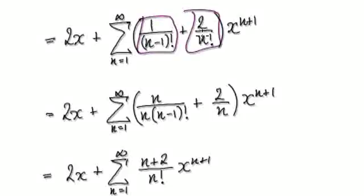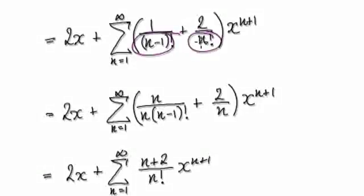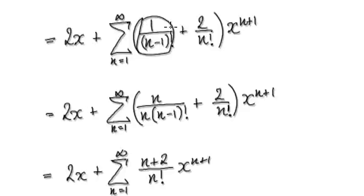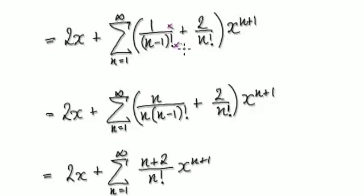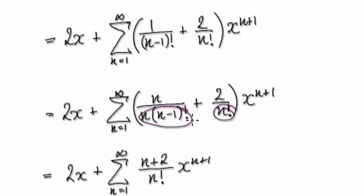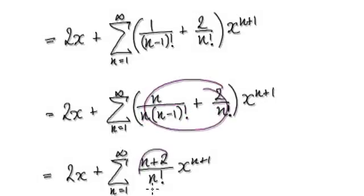Now you've got one fraction plus another fraction and you want to merge them together. In order to merge fractions, the two denominators have to be the same. So multiply top and bottom here by n — this thing here will become this. By the way, this thing here is n factorial. So bearing that in mind, this should be n factorial. Now the two denominators are the same, so we can merge the two fractions, and this will then become this.